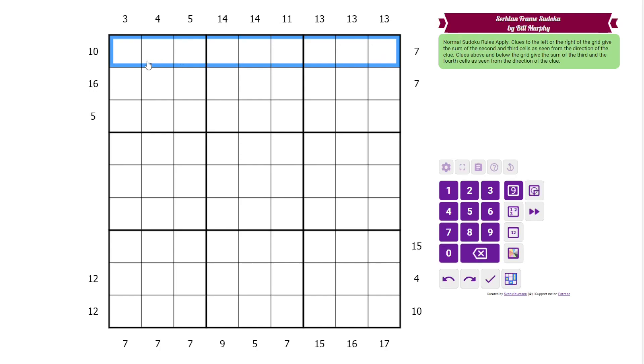We have normal Sudoku rules, one to nine in each row, column, and three by three box.